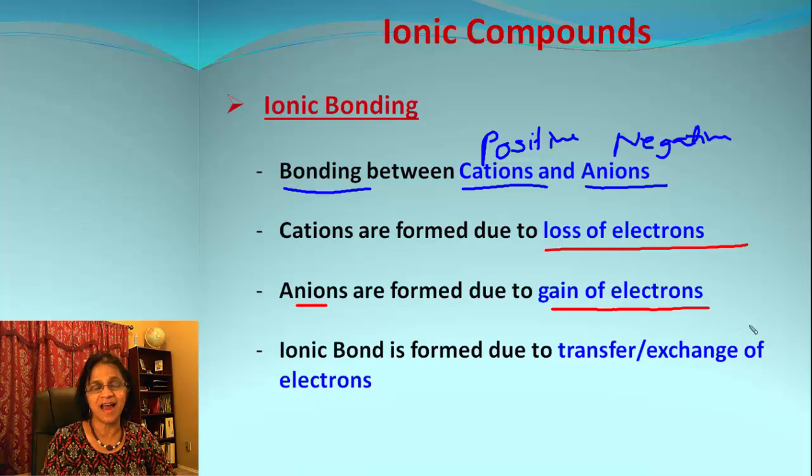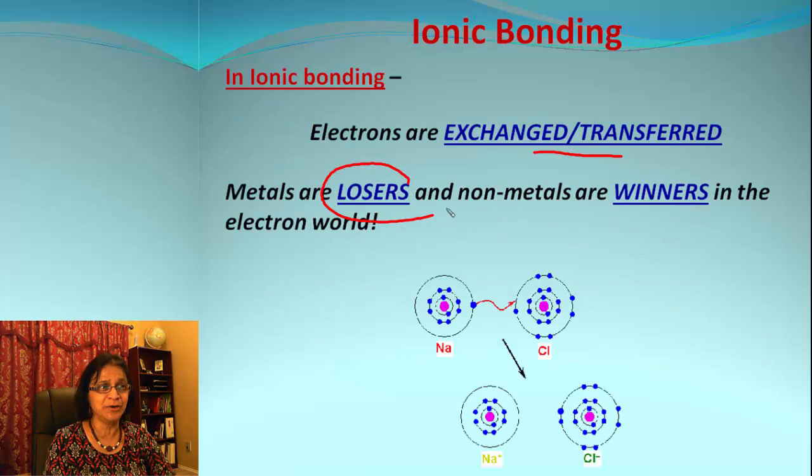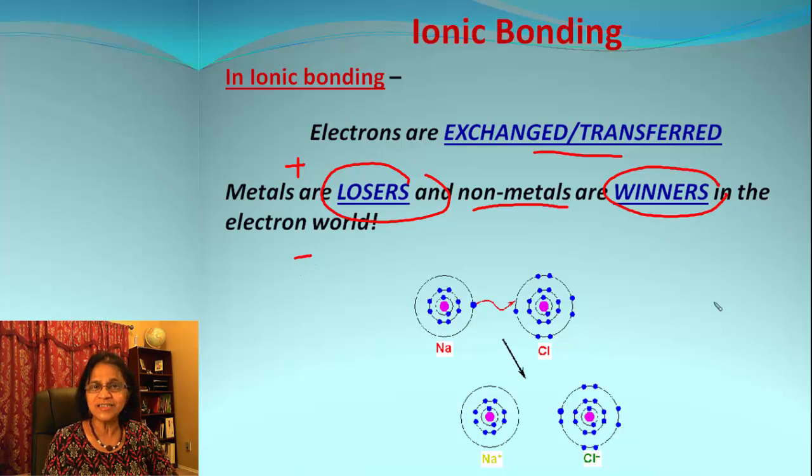So an ionic bond is formed due to transfer or exchange of electrons, and metals are always going to be losers. They will be losing electrons, so metals will be forming positive cations. So which are the anions? Those are non-metals, and they are the winners in the game. That gives them the charge negative.